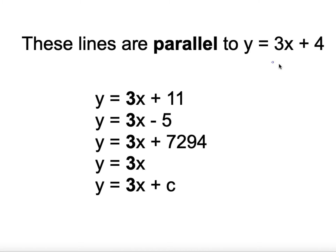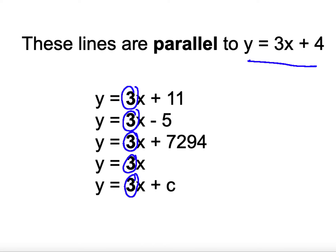A little step forward: which of these lines are parallel to y equals 3x plus 4? The answer is all of them, because in y equals mx plus c the coefficient of x is always the gradient. So the gradient of all these lines is 3 — if you drew them all on a graph they'd all be parallel to y equals 3x plus 4. The term on the end is just the y-intercept; it has no relevance to whether lines are parallel.